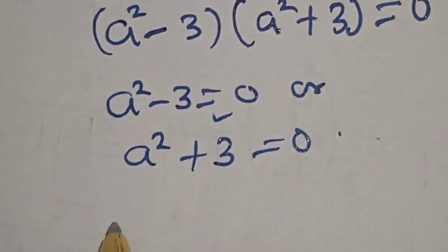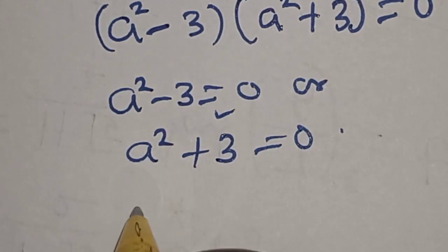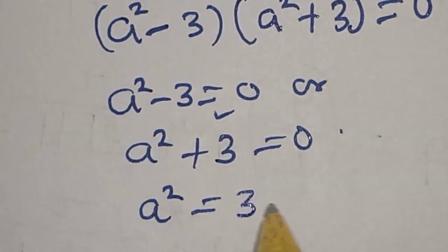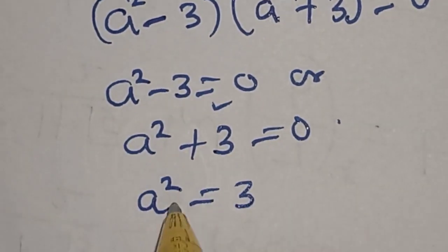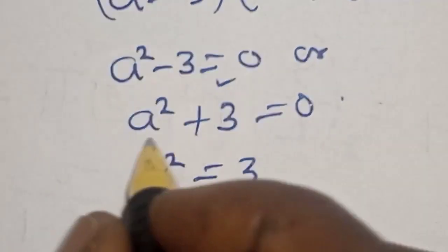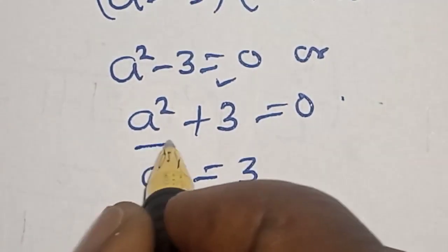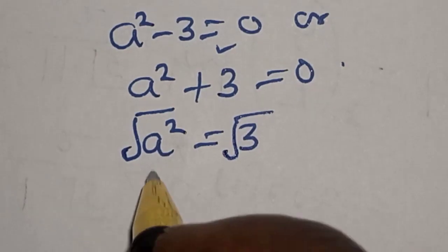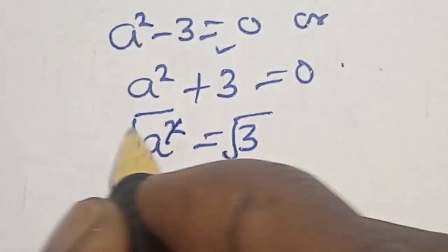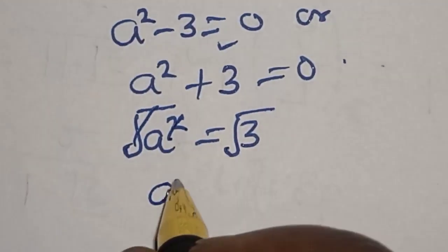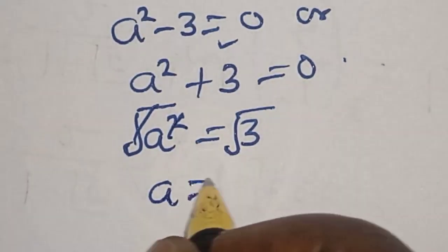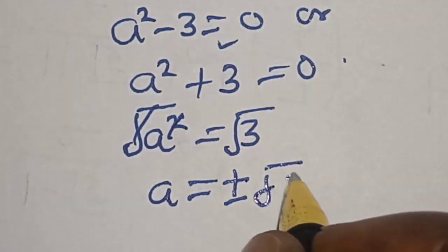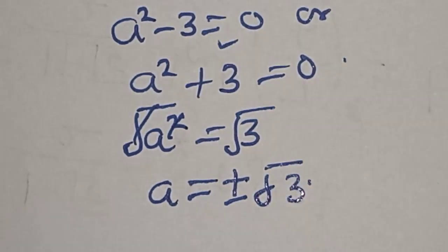From the first case, a squared is equal to 3. Now, let's take the square root of both sides. This will cancel. A is equal to plus or minus square root of 3.